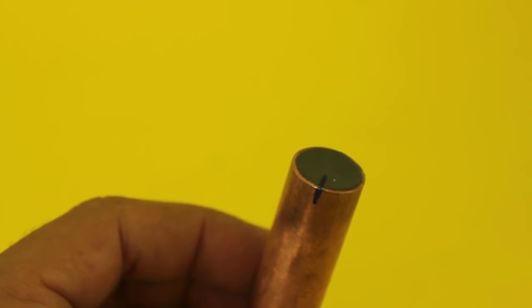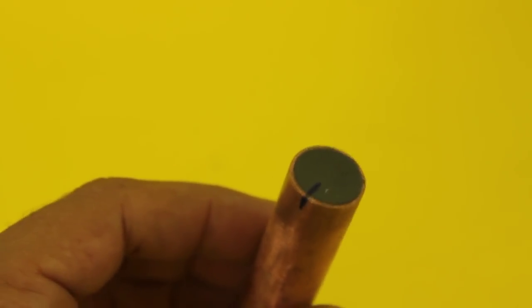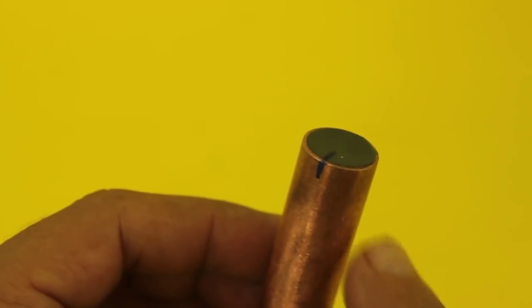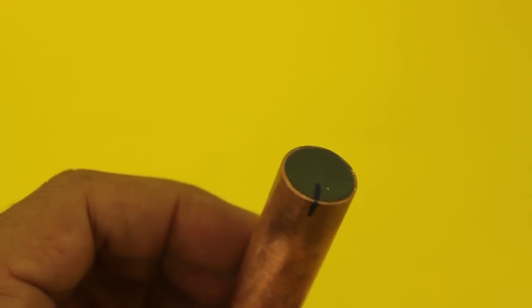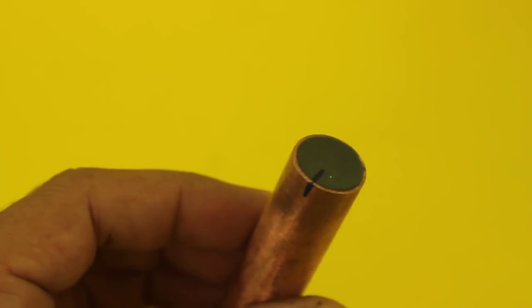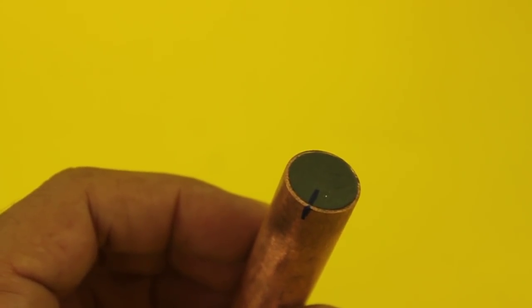Before taking the projectile out, we need to mark the position at which it is inserted. This is because the tube is not perfectly round, it has an eccentricity which is very small but enough to prevent reinserting the projectile if we put it in an incorrect position.